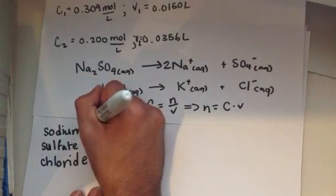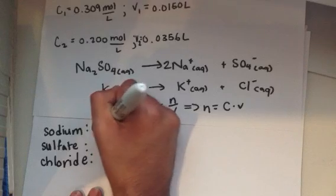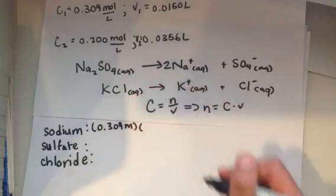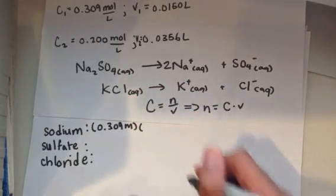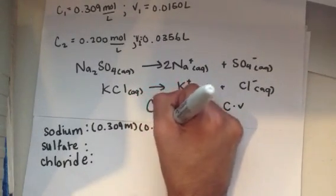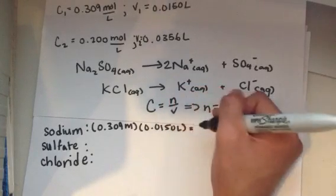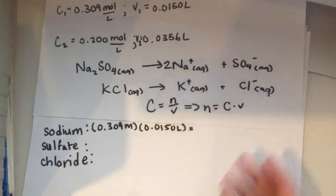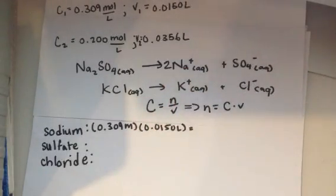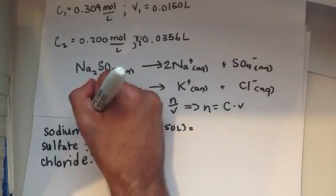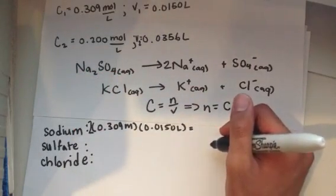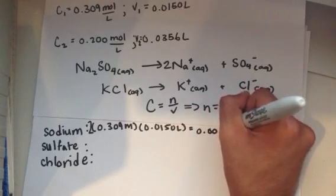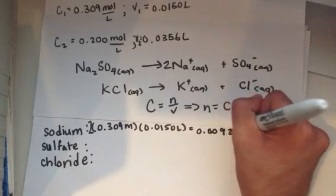For sodium, the concentration is 0.309 molar and the volume is 0.0150 liters. Remember that sodium has a stoichiometric coefficient of 2 that we can't ignore, so we multiply by 2. That gives us 0.00927 moles of sodium ion.